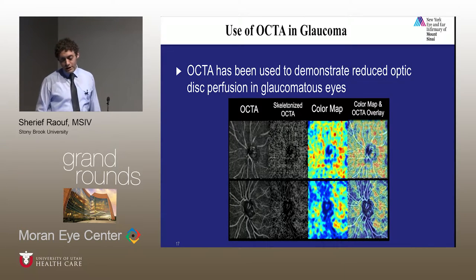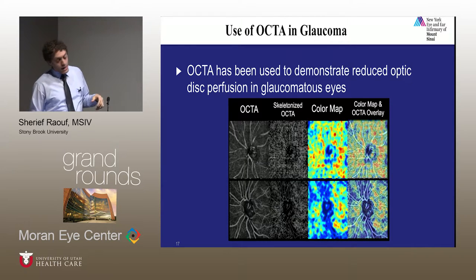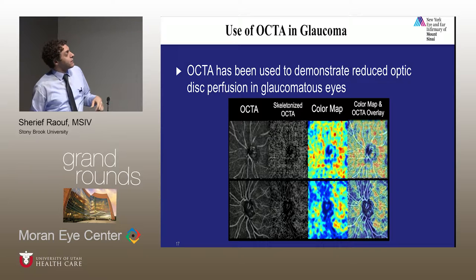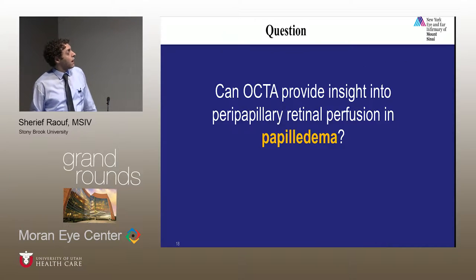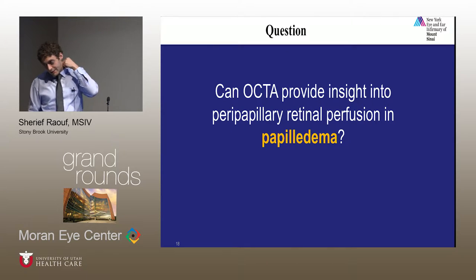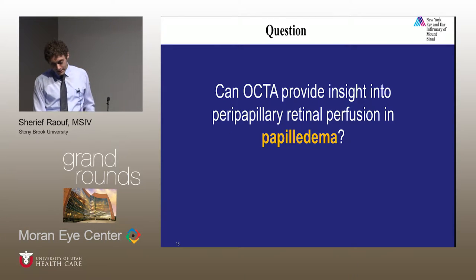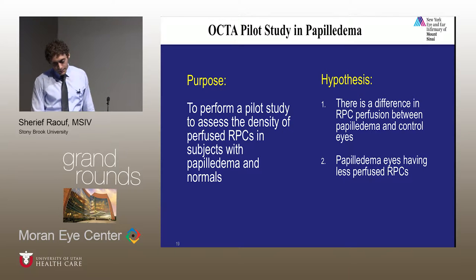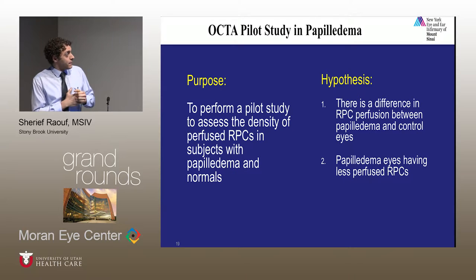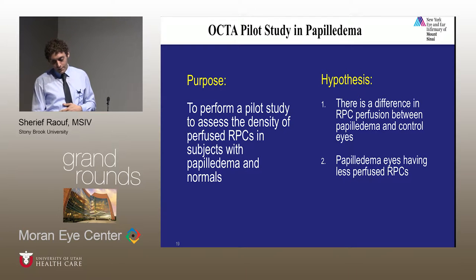A prominent prior paper showed that in normal discs, the dense microvascular network was visible with OCTA, and that it was visibly attenuated in glaucomatous discs. Our fundamental question is: can this provide any new information about peripapillary retinal perfusion in papilledematous eyes? Our two hypotheses were that there would be a difference between our patient and control groups, and that patient eyes would have lower perfusion of the RPCs.